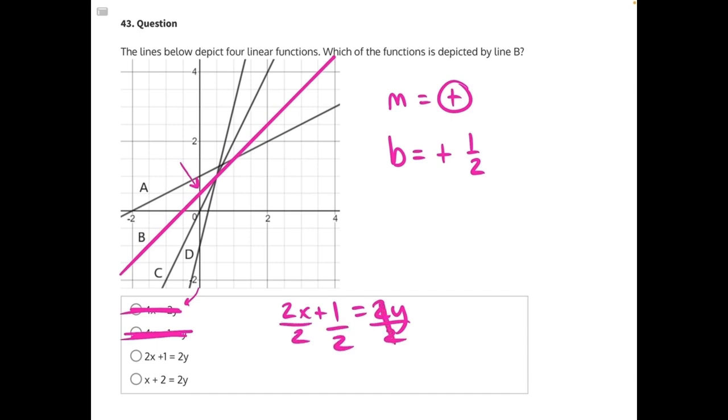These 2s will cancel. 2 divided by 2 over here is going to give us 1x plus one-half equals y. To make it look like slope-intercept form, we can just flip the y to the other side. 1 times x is just x. This matches our slope—it has a positive slope—and it matches our y-intercept, so that would make C our correct answer.